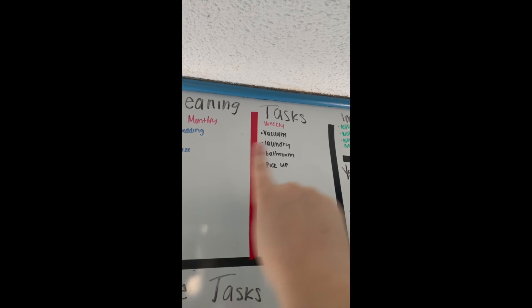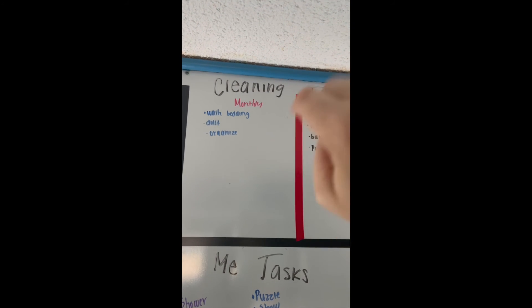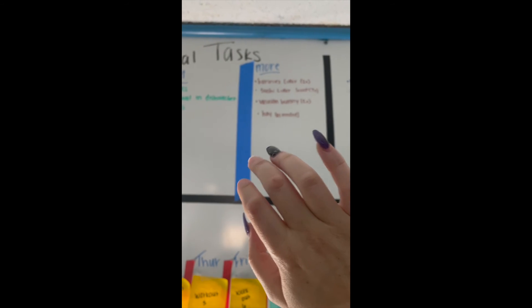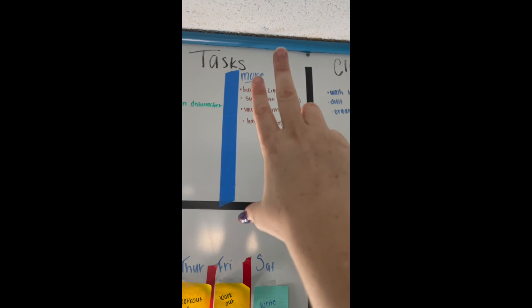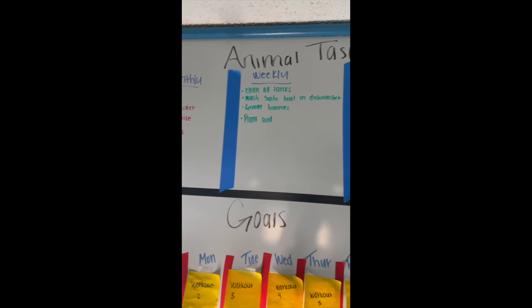Up here, I've got my monthly and my weekly cleaning tasks as far as my room goes. And then over here, I've got my animal tasks and I've got a monthly, weekly, and a more times per week with like how much I need to do it in parentheses.